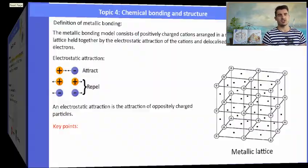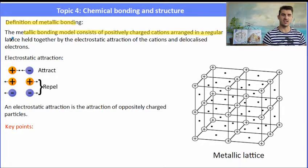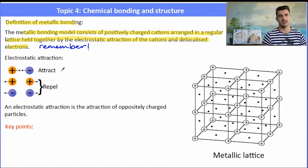So what is the definition of metallic bonding? The metallic bonding model consists of positively charged cations arranged in a regular lattice and they're held together by the electrostatic attraction between the cations which are positively charged and the delocalized electrons. Delocalized means they don't belong to one of the cations, they belong to the lattice as a whole.